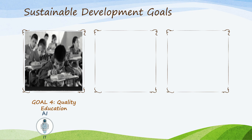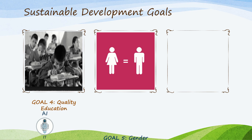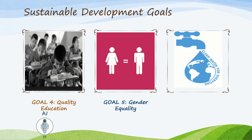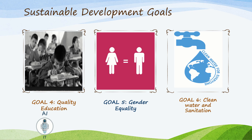The fourth goal is Quality Education — to ensure inclusive and equitable quality education and promote lifelong learning opportunities for all. The fifth goal is Gender Equality — to achieve gender equality and empower all women and girls. The sixth goal is Clean Water and Sanitation — to ensure availability and sustainable management of water and sanitation for all.